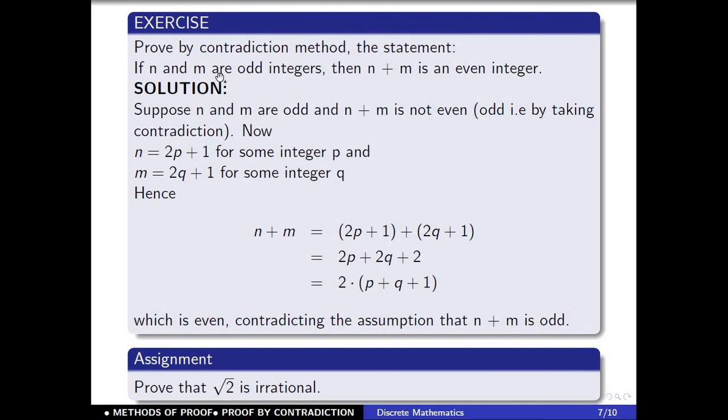The statement is: if n and m are odd integers, then their sum is an even integer. We have proved this by contradiction.